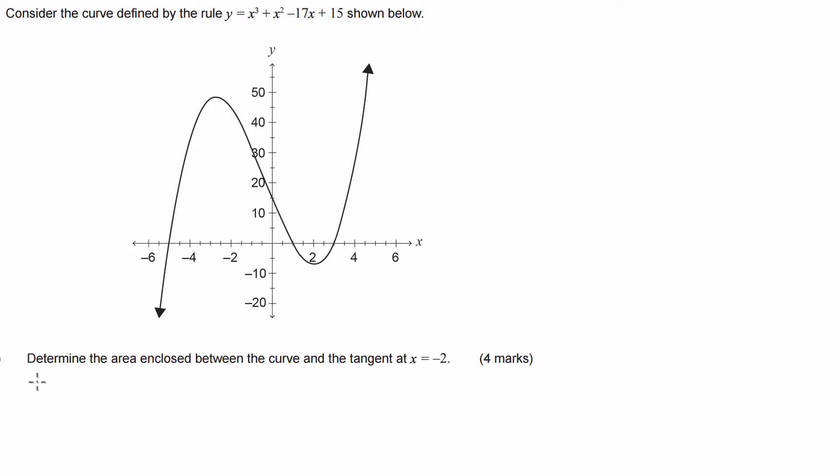Here we have a question from the 2014 3CD WACE exam. This is the second part of a two-part question where we're asked to find the area that is enclosed between this curve that we're given and a tangent at x equals negative 2. From part a, we find that the equation for the tangent line is y equals negative 9x plus 27.